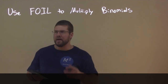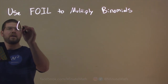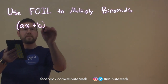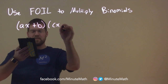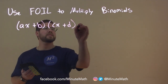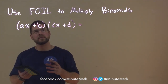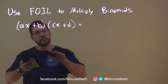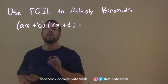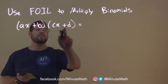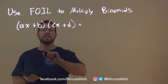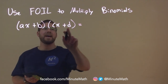So where are we getting that? We see this expression written like this: AX plus B times CX plus D. When we multiply them, we multiply the first terms first, then outer terms, then inner terms, then last terms. So our first terms are AX and CX, the outer terms are AX and D, the inner terms are B and CX, and the last terms are B and D.